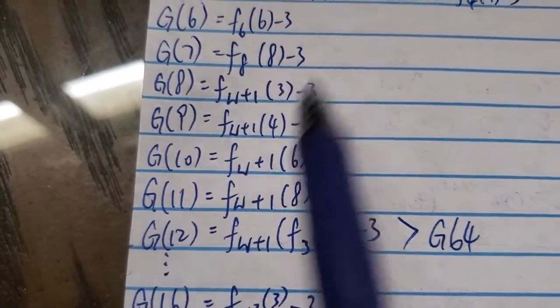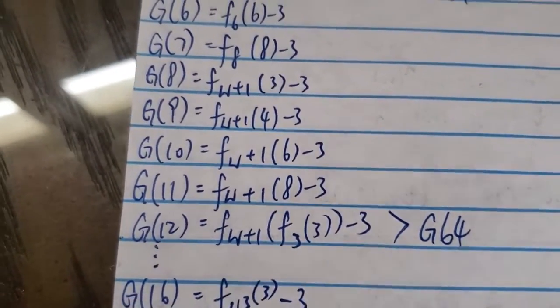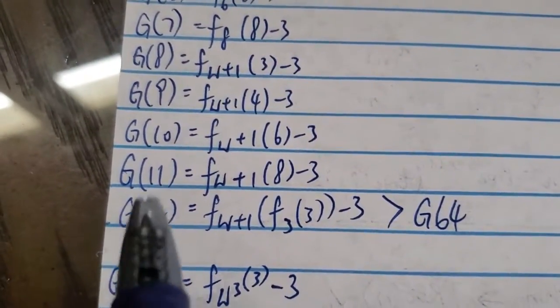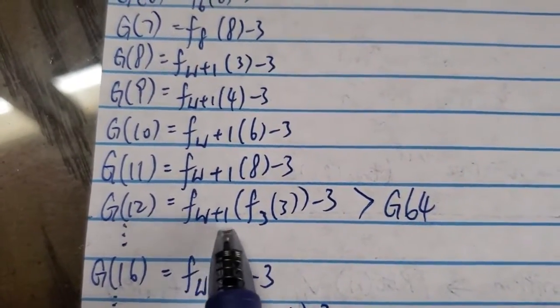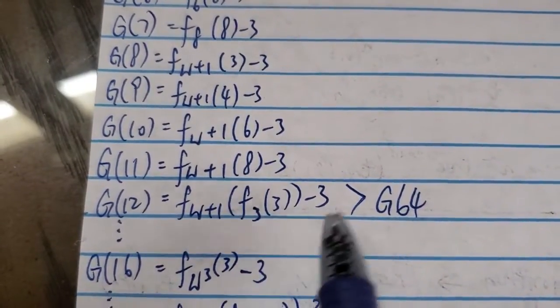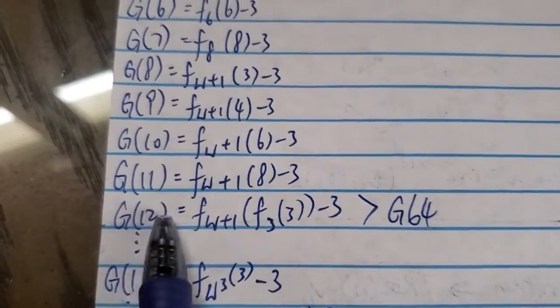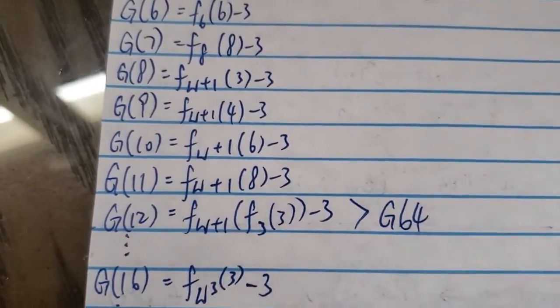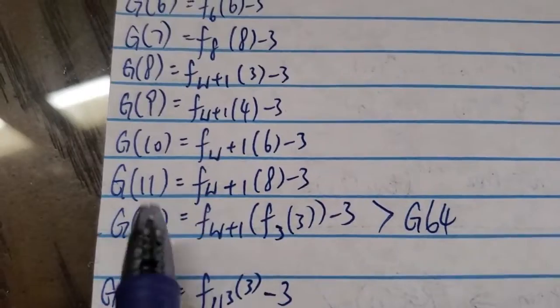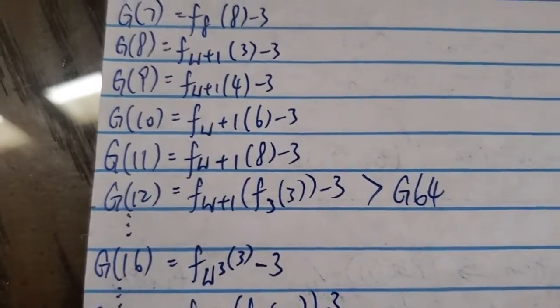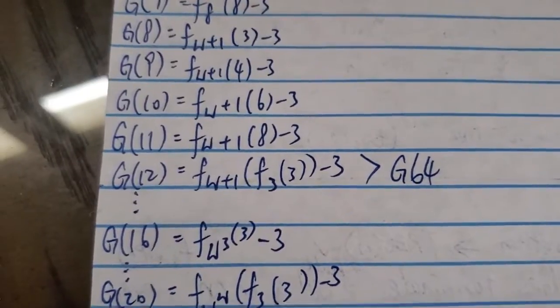And for, again, you can pause the video to read it yourself if you want. And it's also on Googleology wiki. For g of 12, it's already f of omega plus 1 of this thing over here, which is greater than g64, Graham's number. So for the number 12, the number of steps to reach zero is greater than Graham's number already for the 12, if you put 12 into the Goodstein sequence.